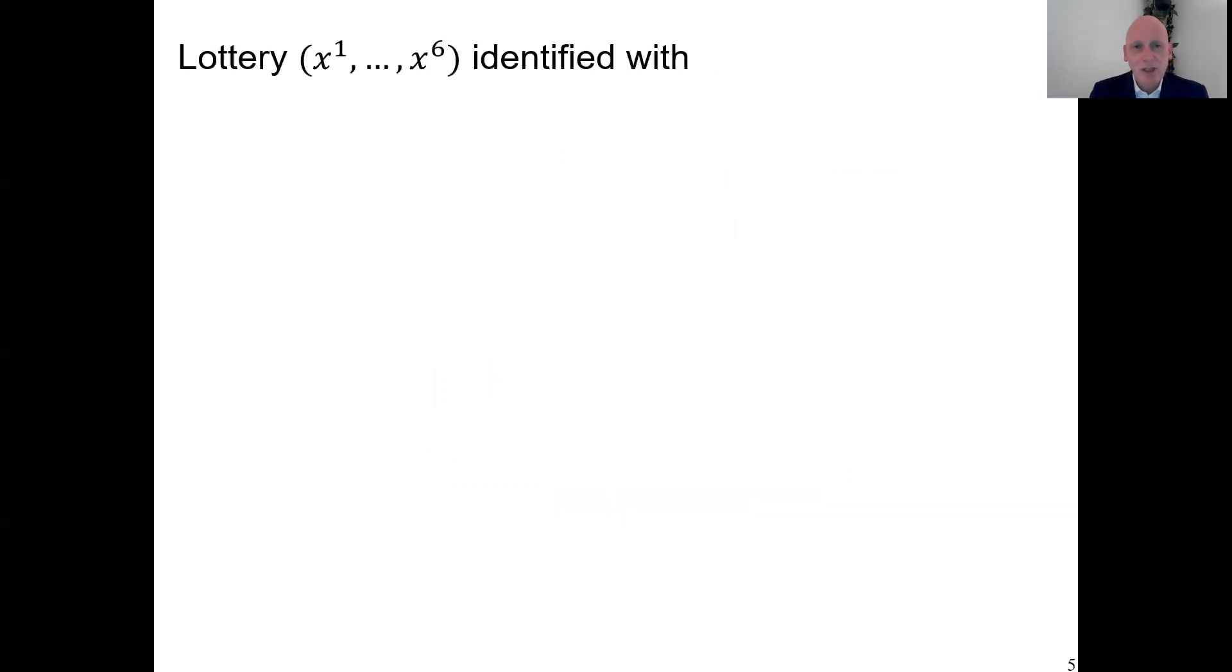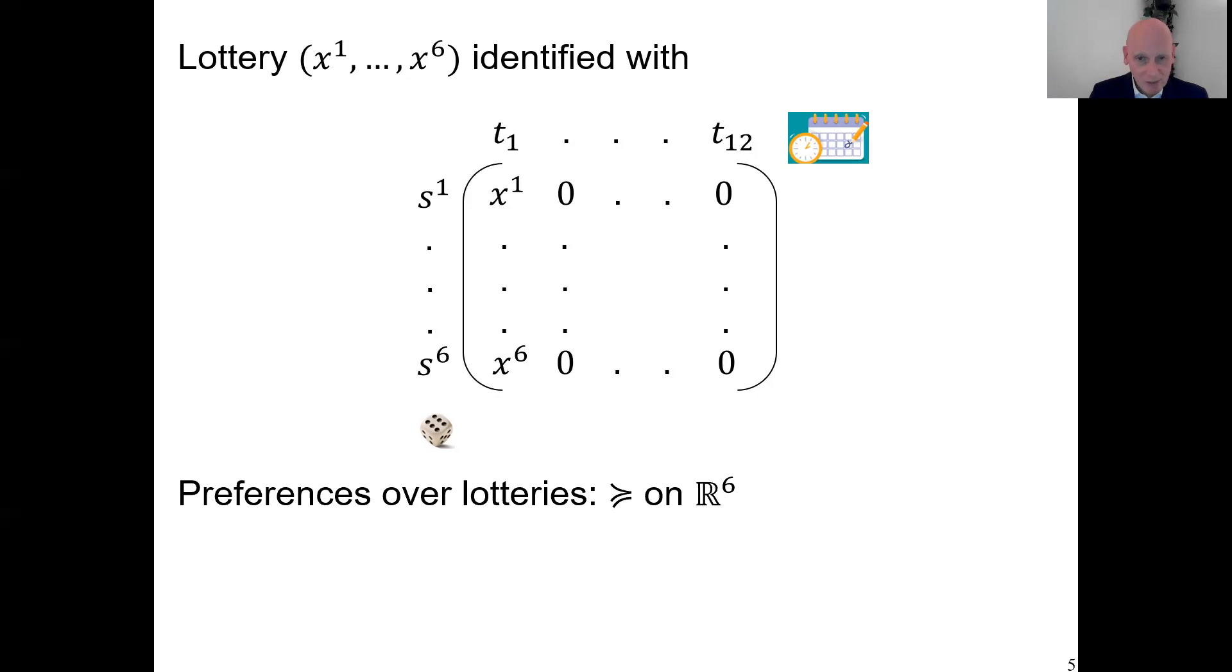Similar story for lotteries. Here's a lottery with no time points specified. I have in mind you just get that lottery, let's say time point T1 if that is the present, you just get it, nothing more in the future. It's that lottery, nothing more. That way, by identifying lotteries with matrices in this manner, we get a preference relation over the lotteries also.